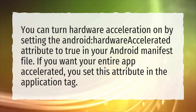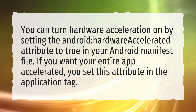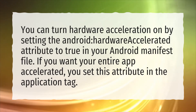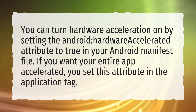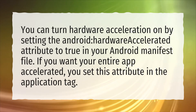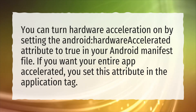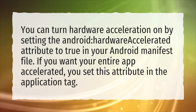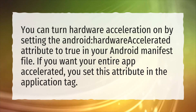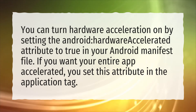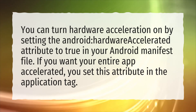You can turn hardware acceleration on by setting the Android hardware accelerated attribute to true in your Android manifest file. If you want your entire app accelerated, you set this attribute in the application tag.